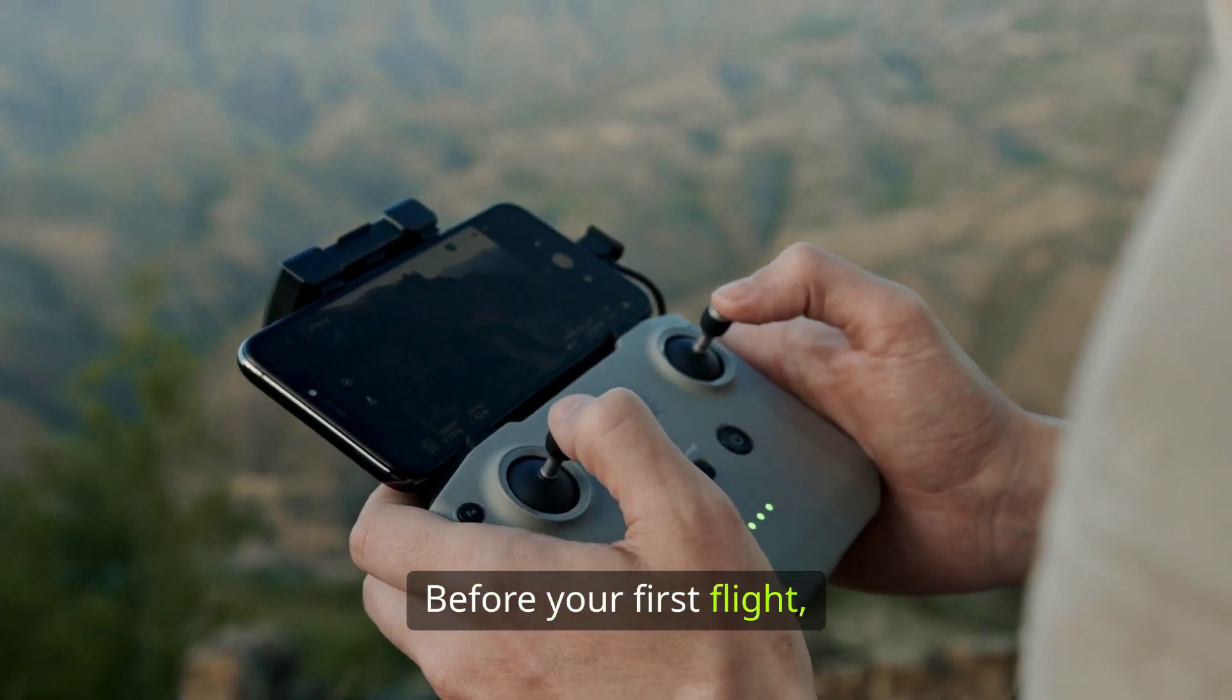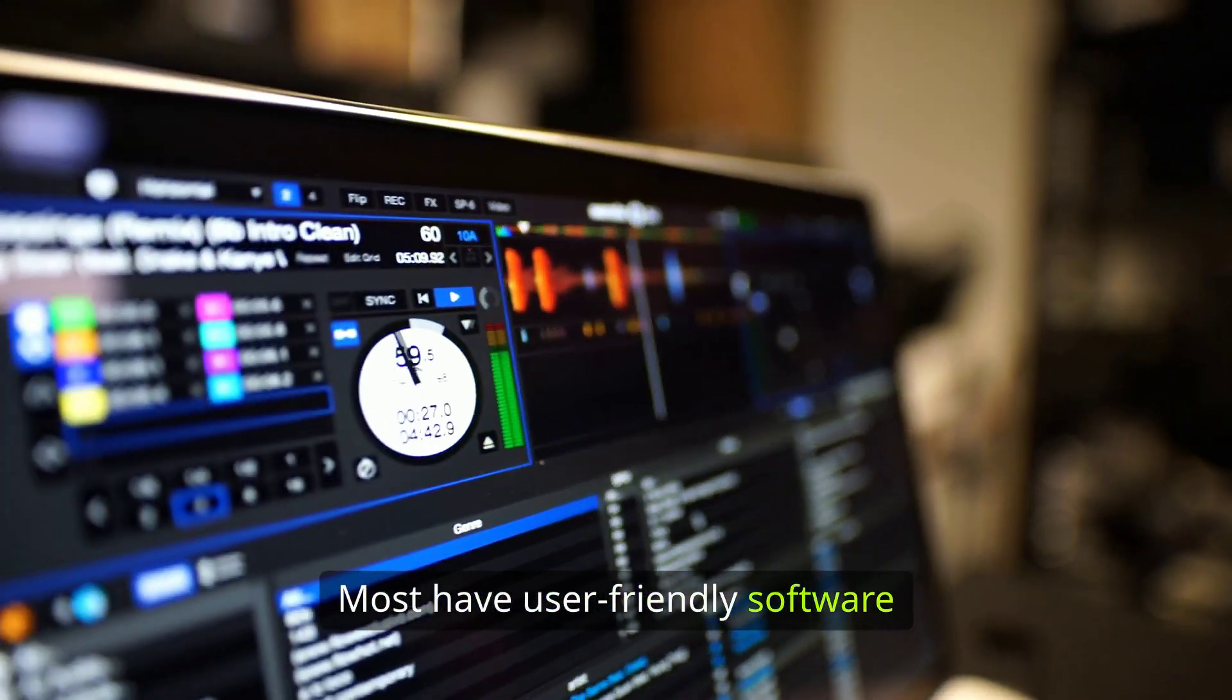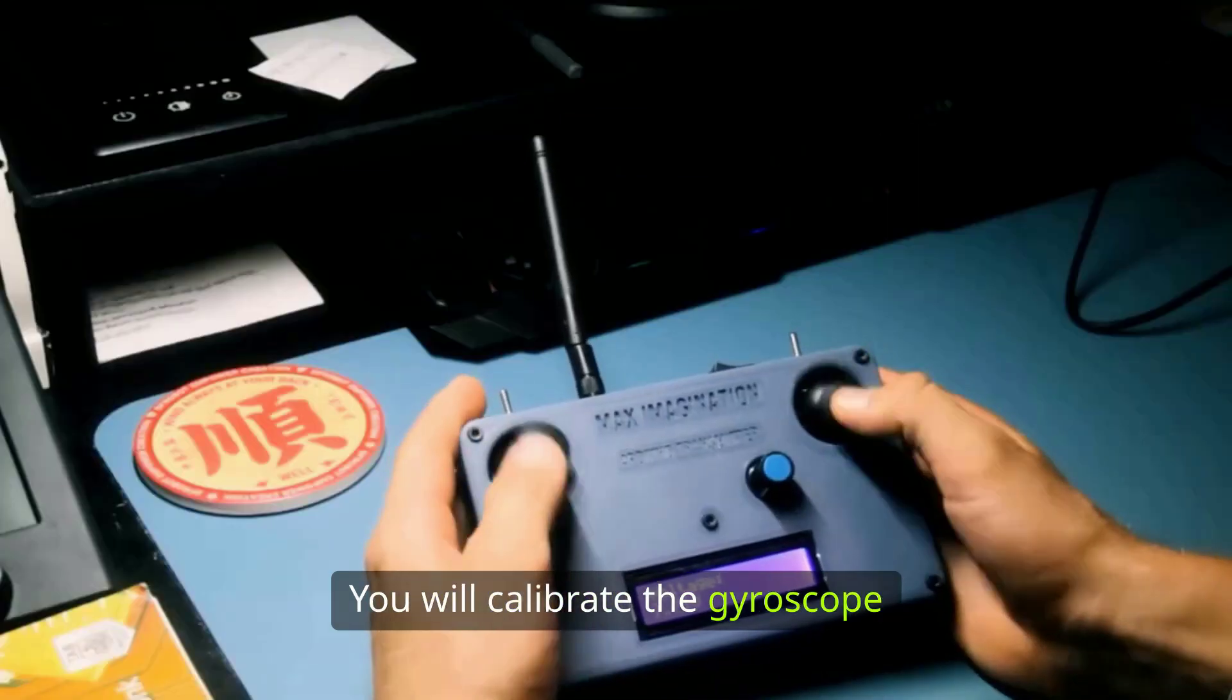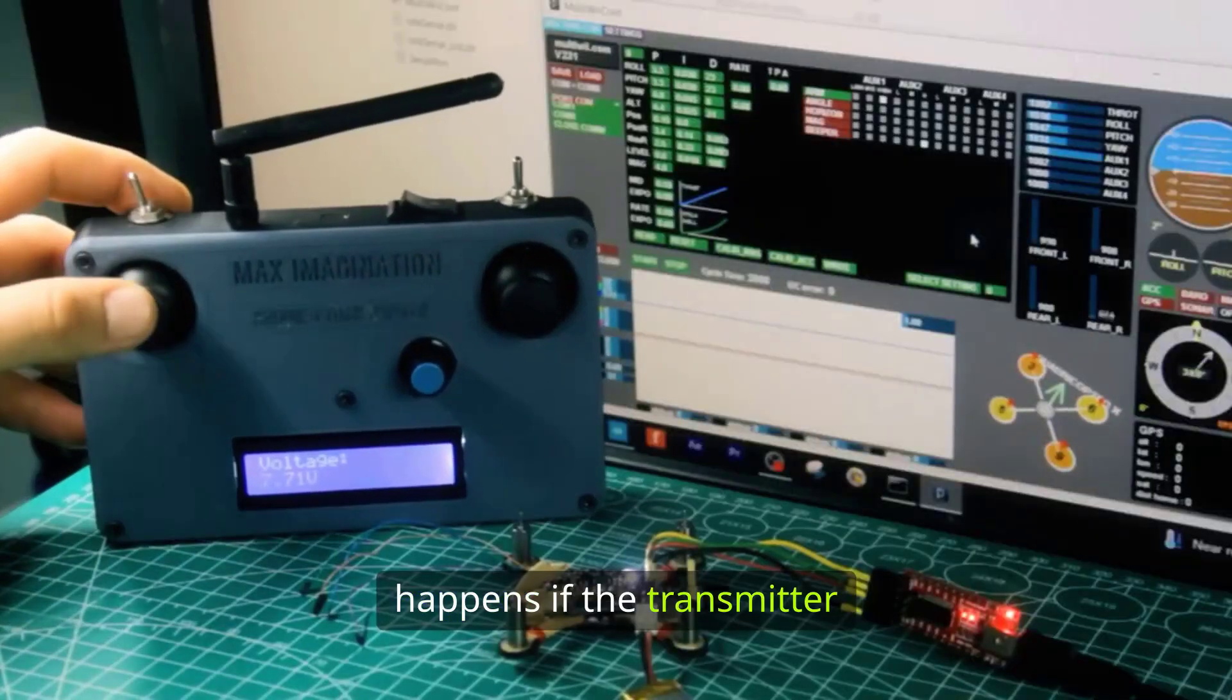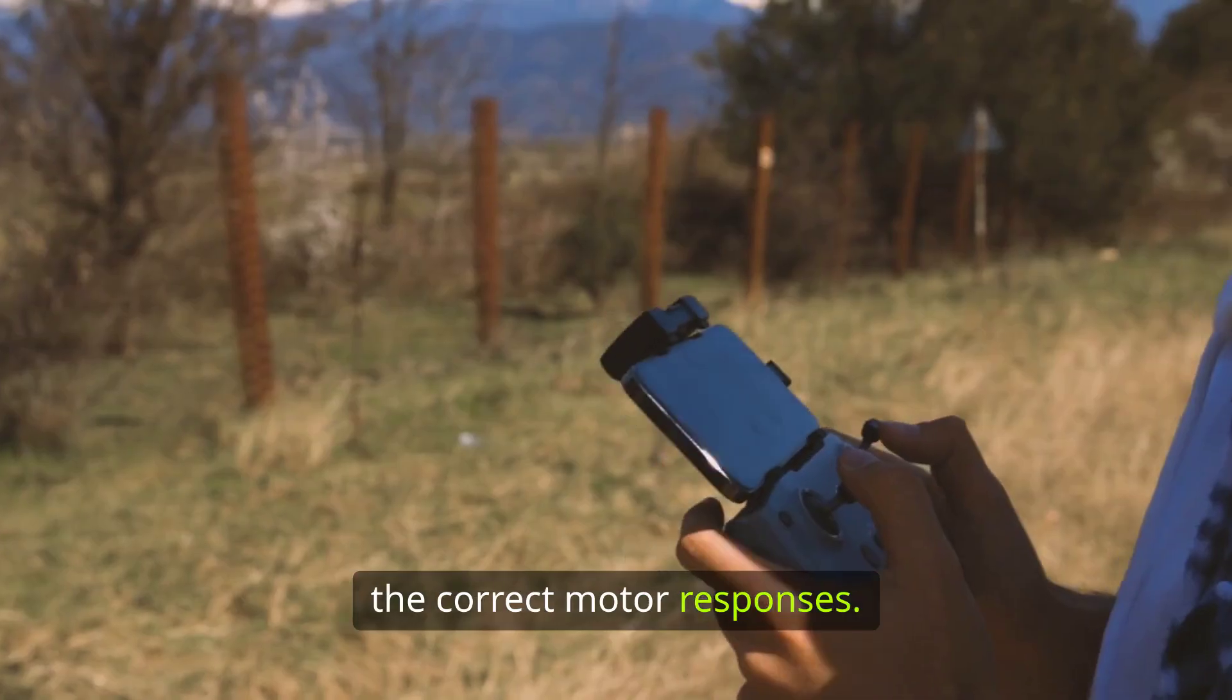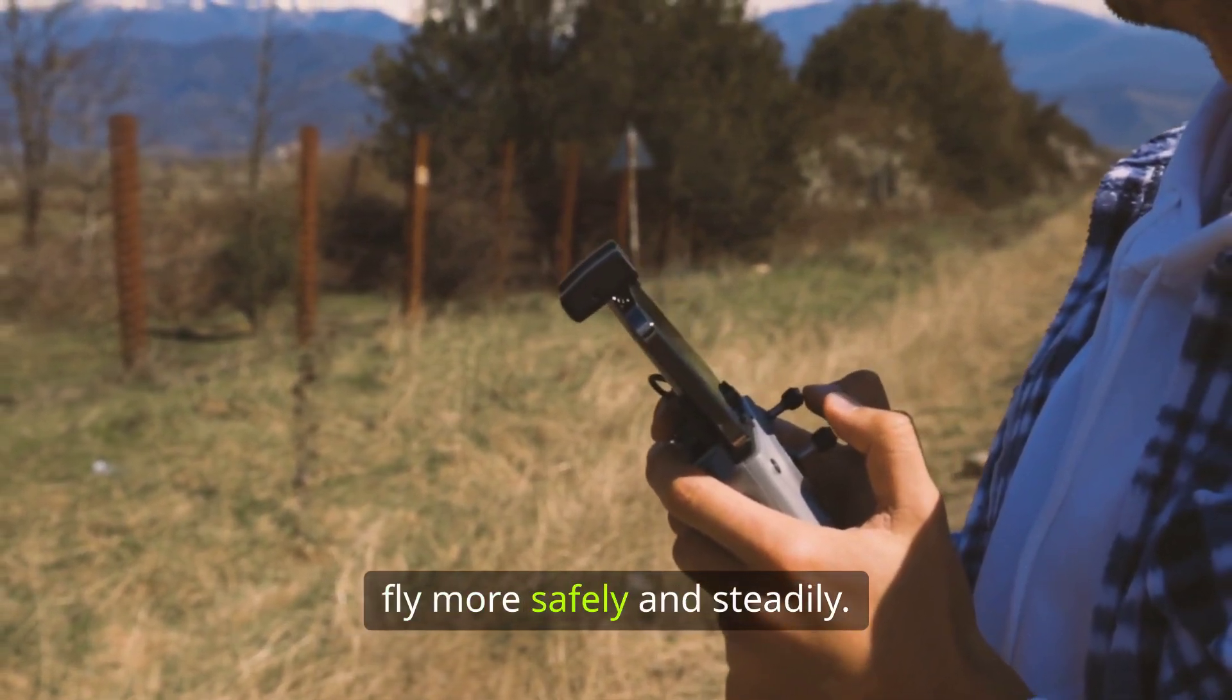Before your first flight, configuring the flight controller is very important. Most have user-friendly software that you can access via a USB port on your computer. You will calibrate the gyroscope and accelerometer, set up safety modes, such as what happens if the transmitter signal is lost, and confirm that control commands produce the correct motor responses. Many controllers also offer basic automatic stabilization functions to help beginners fly more safely and steadily.